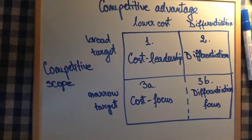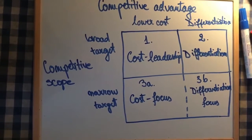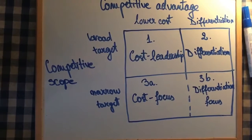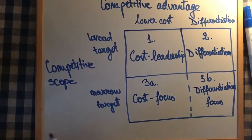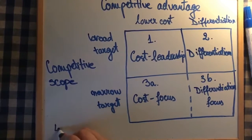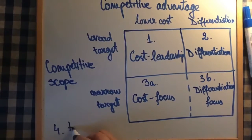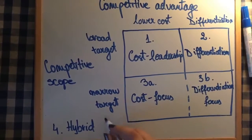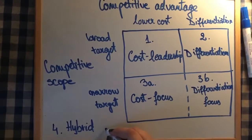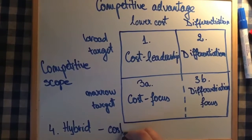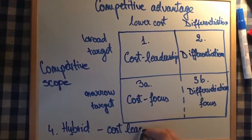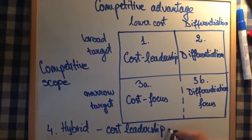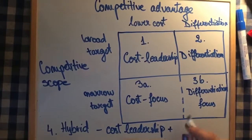There is one additional strategy not in this table because it is a combination of different strategies — it is called the hybrid strategy. The hybrid strategy is a combination of cost leadership and differentiation: it wants to have lower costs but also wants to differentiate from competitors.